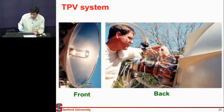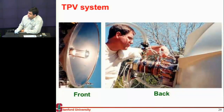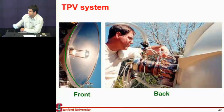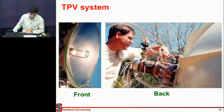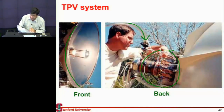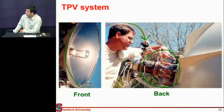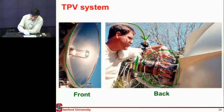Here is a flow chart and an actual system. The front of the system is a large disk collecting sunlight. At the back, there is fluid coming in to keep the cell at a decent temperature. At the very back, you have the solar cells located there.